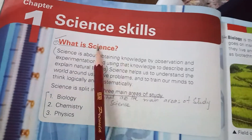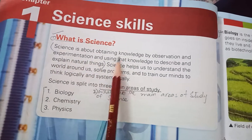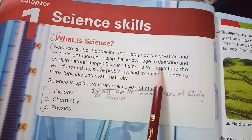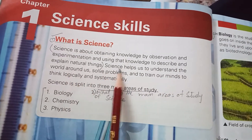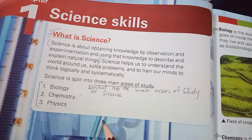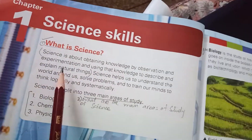Bismillahirrahmanirrahim. In our sixth class, we are starting the revision of our first assessment. Chapter one is Science Skills. What is science? Science is about obtaining knowledge by observation and experimentation, and using that knowledge to describe and explain natural things. Science is about observation — what, why, where, and when.